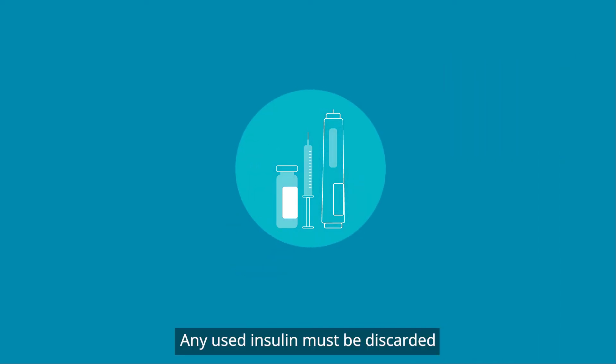Insulin being used should be kept at room temperature, 15 to 25 degrees Celsius, as this is more comfortable to inject. Any spare insulin should be kept in its box in the refrigerator. Any used insulin must be discarded after 28 days.